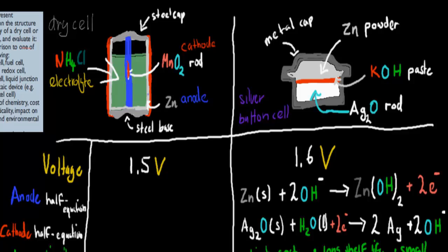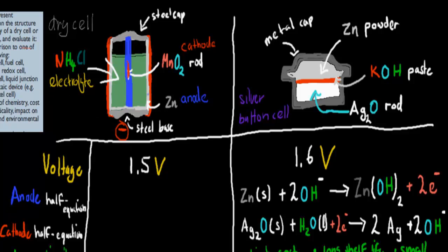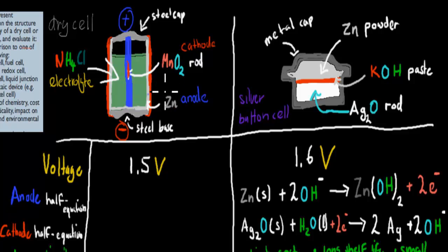Our positive terminal is at the top and our negative terminal is at the bottom. The direction of electron flow will be from negative to positive. You should know your cathode, anode, and electrolyte for the different batteries you've chosen, and you should also compare the voltage.